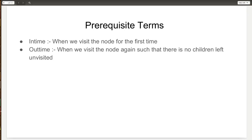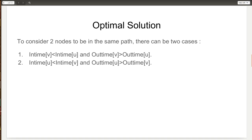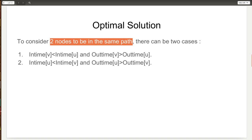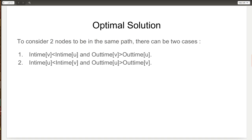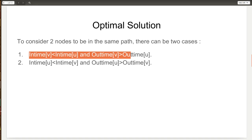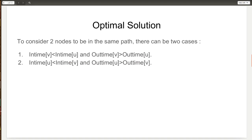Now that we understand the prerequisites, let's look at the solution. If we assume that 2 nodes are on the same path, it must mean that either one of them is the parent and the other is the child. So if we check whether nodes U and V are on the same path, in the first condition we check whether V is the parent of U, and in the second condition we check whether U is the parent of V. If either one turns out to be true, it means that U and V are on the same path.